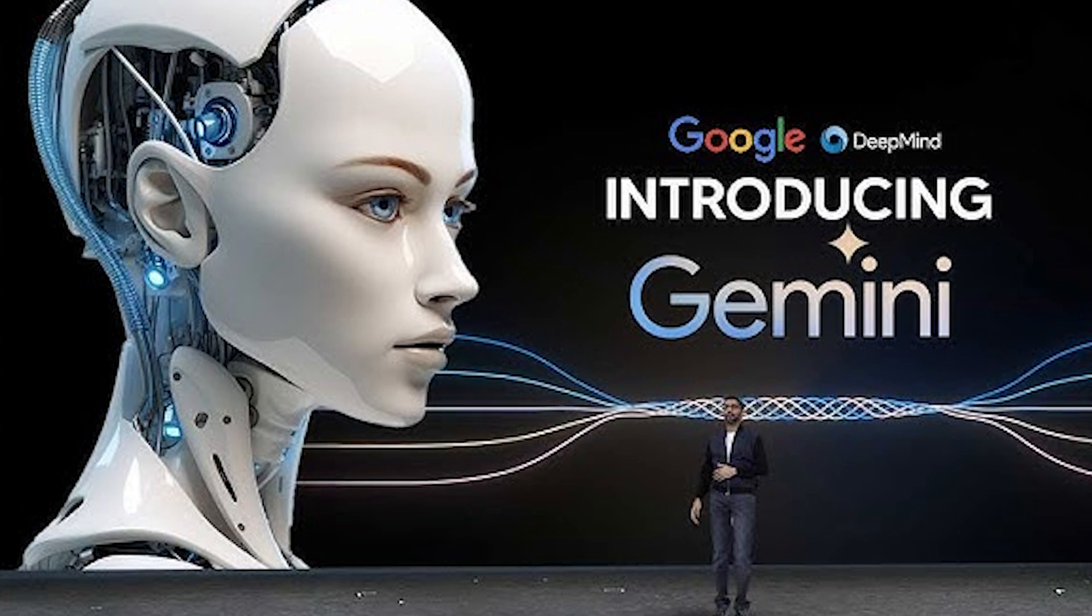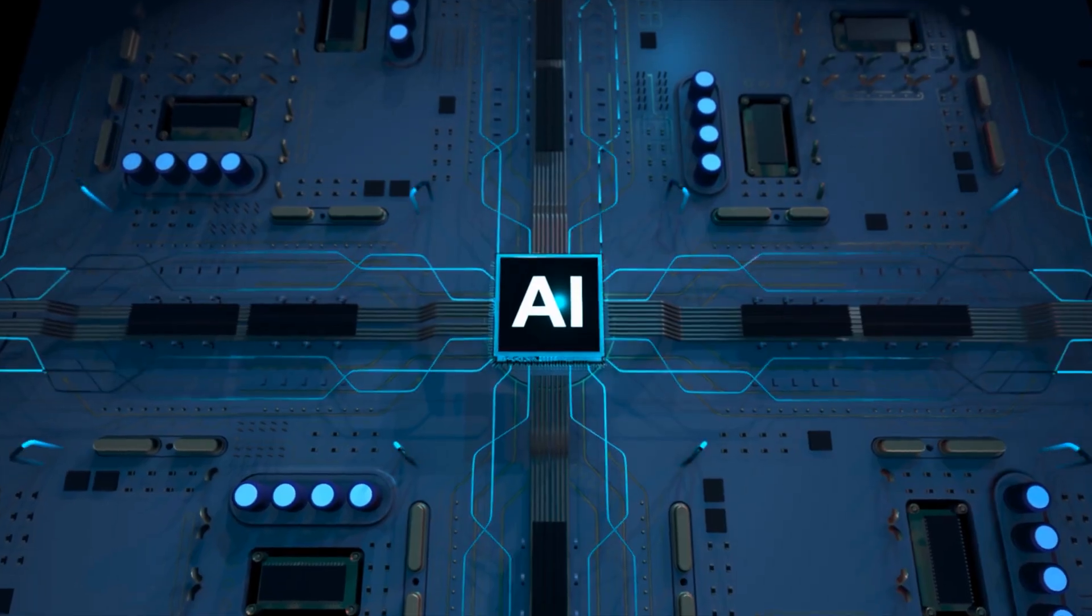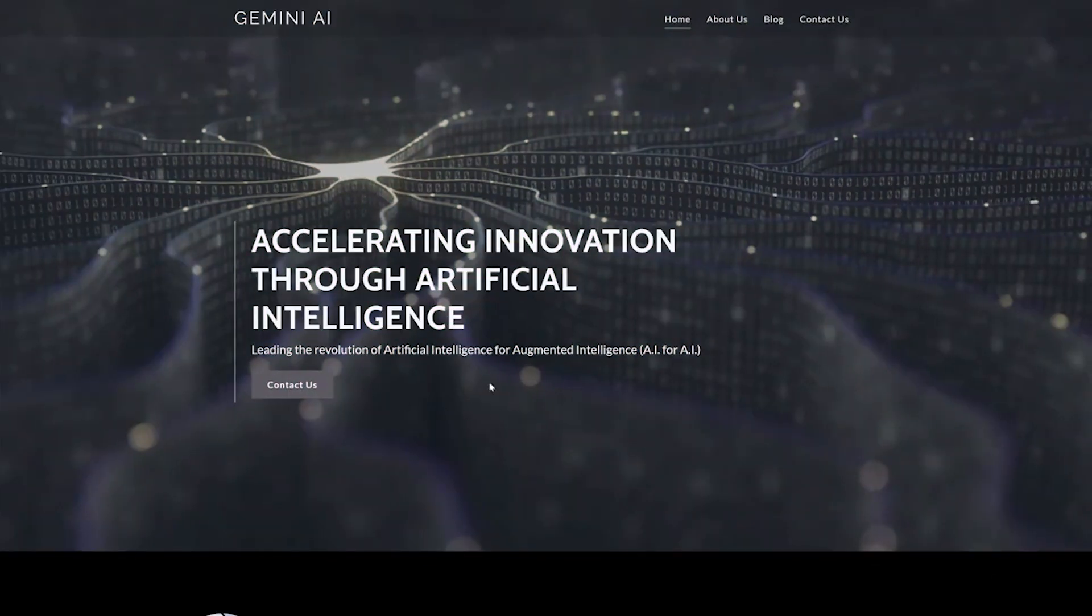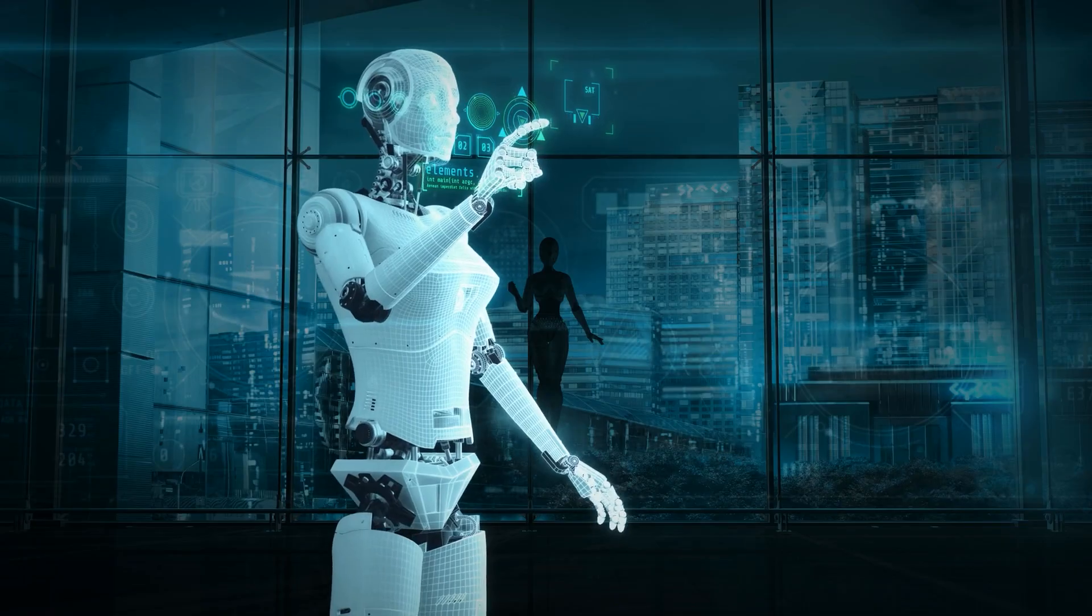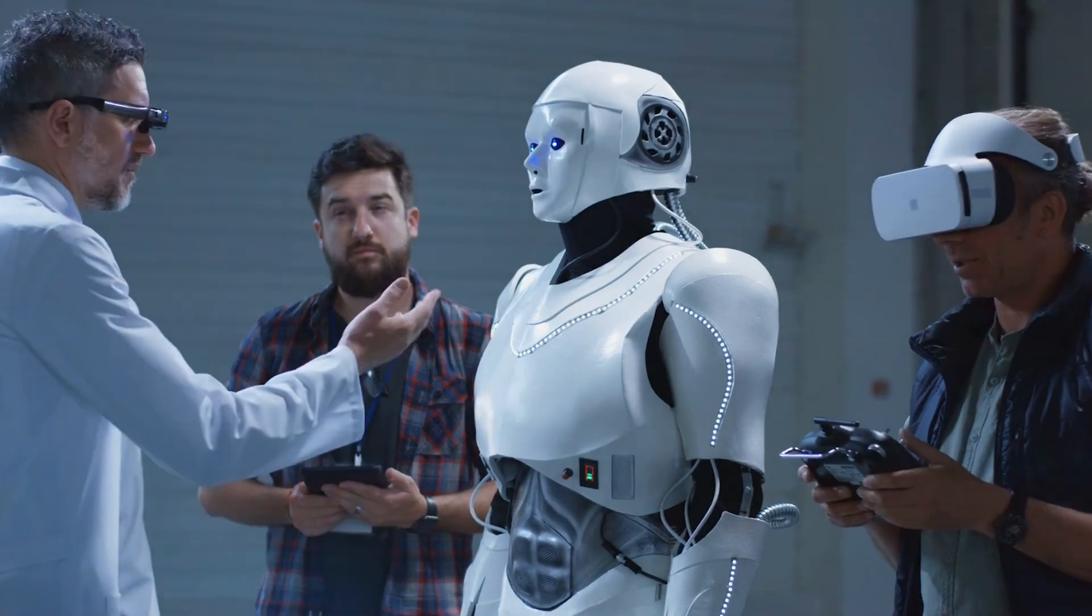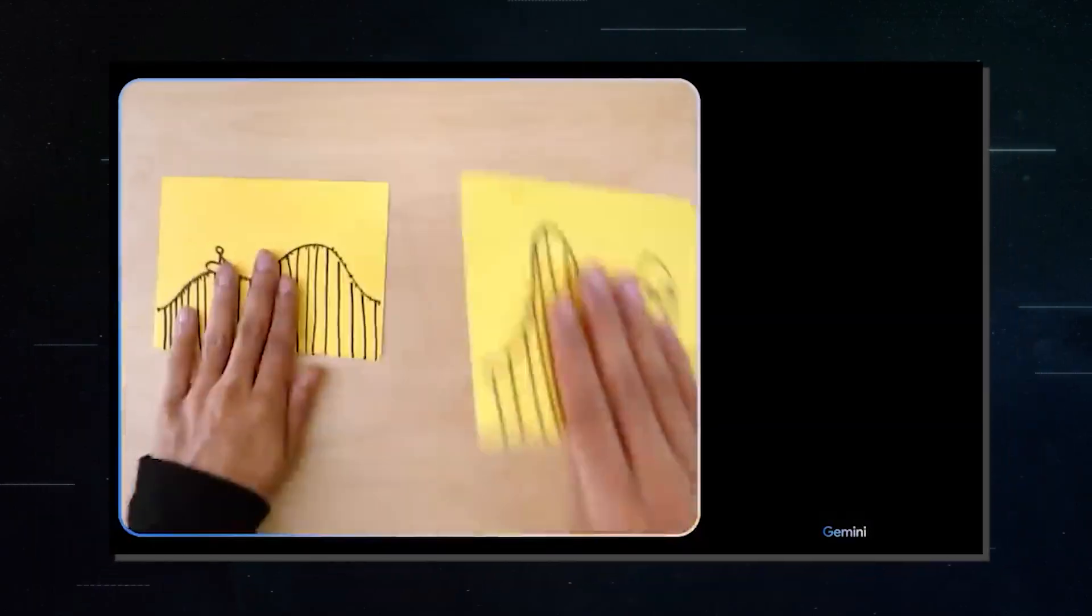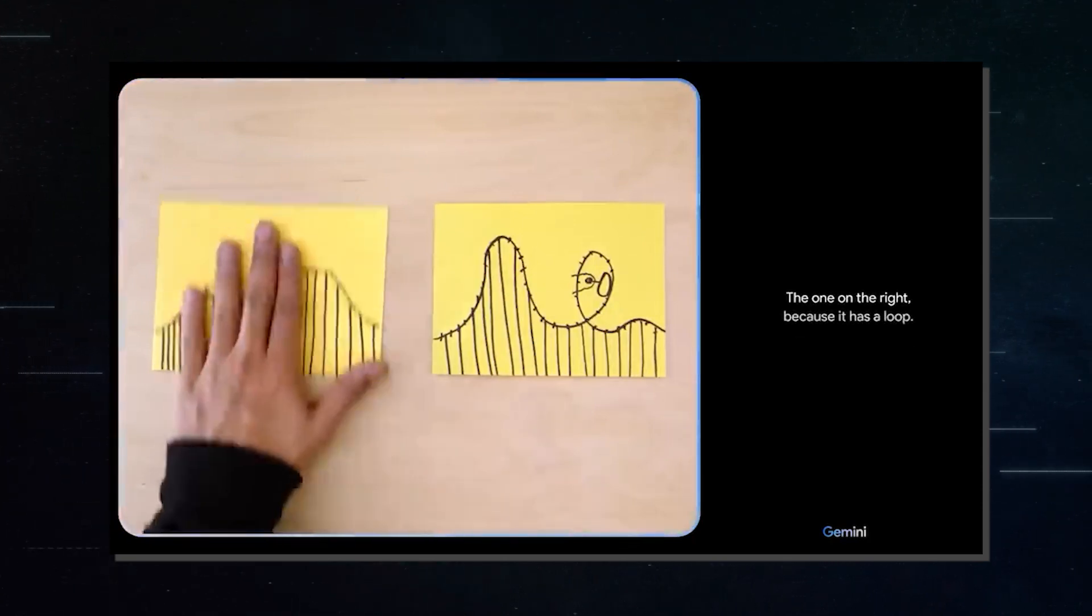As we look to the future, Gemini isn't just about surpassing GPT-4 or dominating benchmarks, it's about shaping the next chapter in AI. Google envisions Gemini playing a pivotal role in advancing toward artificial general intelligence, AI that's self-improving and smarter than humans. And with this vision comes a commitment to safety and ethical development. Gemini is being meticulously tested to ensure it's a responsible advancement in AI technology.